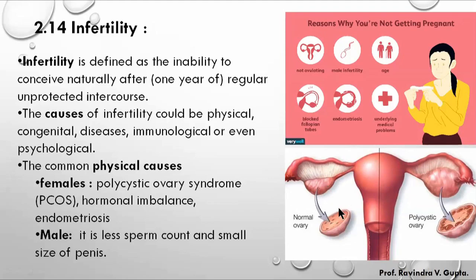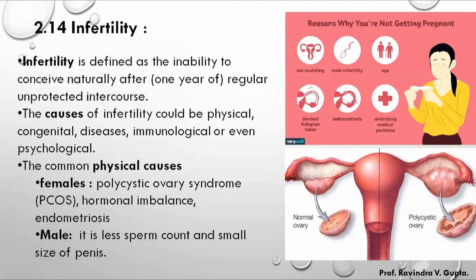In a normal ovary, the size is regular. But if you look at the right side of the ovary in that female, the ovary will be inflated — its size increases and cyst formation occurs. This leads to ovarian syndrome with inflammation and hormone imbalance.